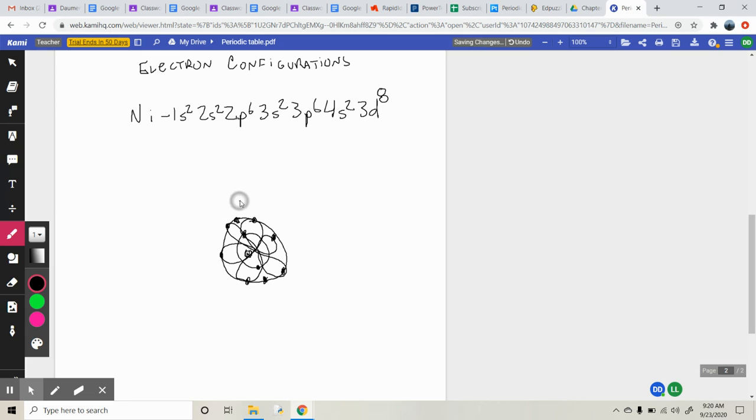Now we have 3s2, so now I'm in the third energy level with two electrons. 3p6 time. So again, remember that's that big double dumbbell, or single dumbbell, sorry, but just with three orientations. And remember, each orbital gets an electron before they start doubling up. So that's why I'm filling it in that order.